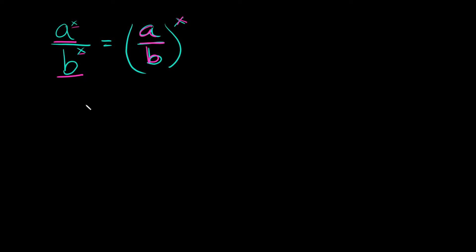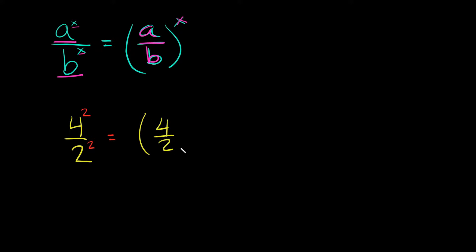Let's do an example to clarify this, and then I'll get into some more complicated examples that aren't as obvious right off the bat. If we had four over two, both raised to the second power, this is going to equal four divided by two, and then we raise whatever we get to the second power.